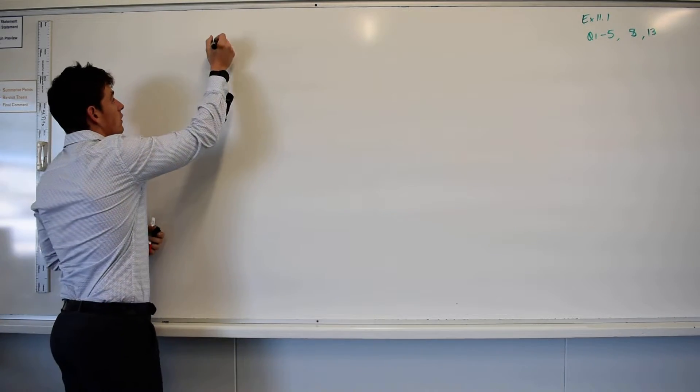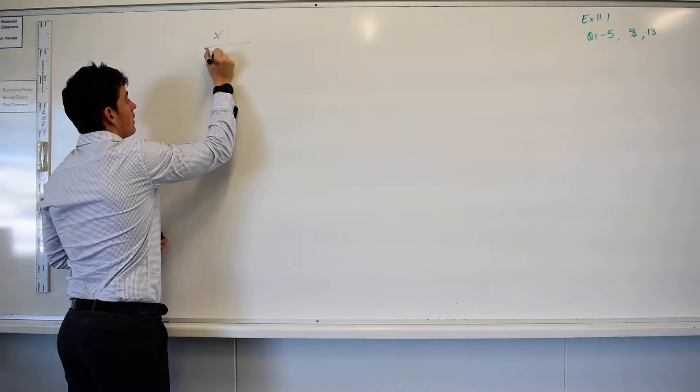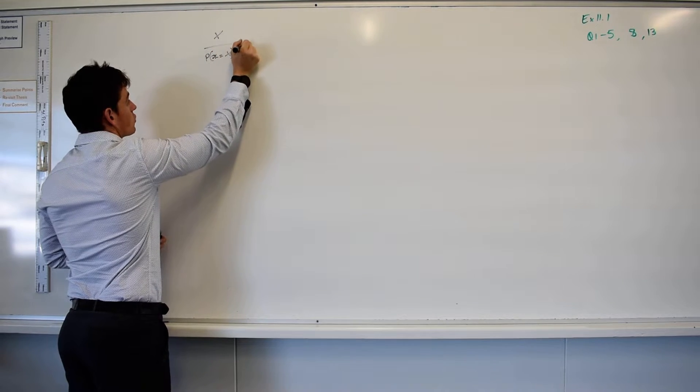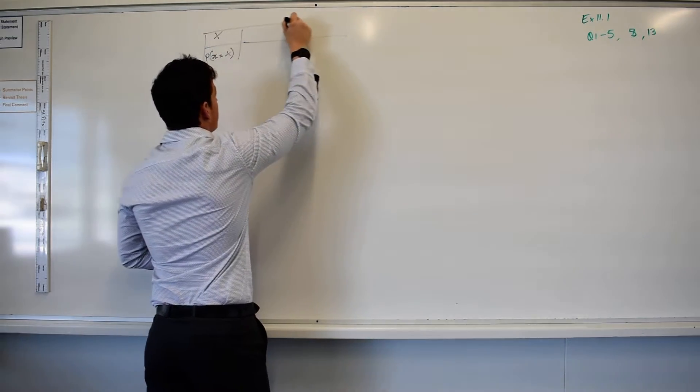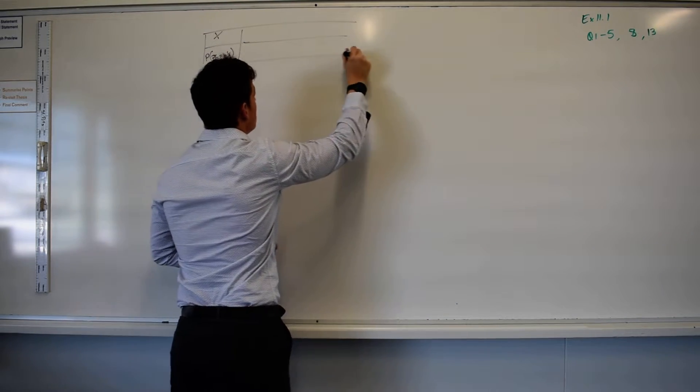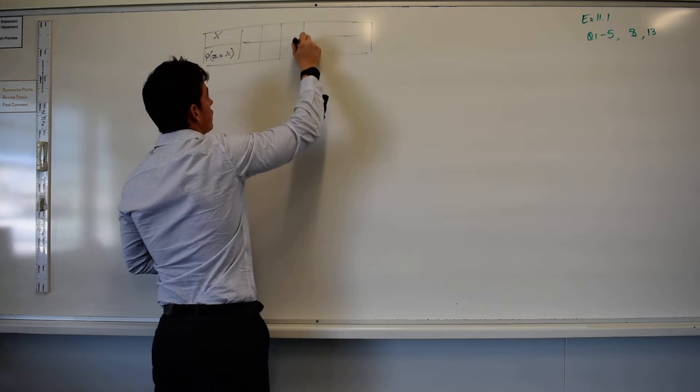So if I was to roll a singular die, I have X representing my score, and I have the probability that X equals whatever that score is. So if I'm filling in this table, I want you to join me when I'm filling in this table. How many scores should I have on a regular sided dice?